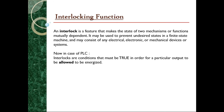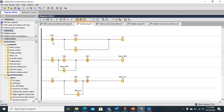Now we move to the interlocking function. Interlock is a feature that makes the state of two mechanisms or functions mutually dependent. It may be used to prevent undesired states in a finite state machine and may consist of electrical, electronic, or mechanical devices or systems. In PLC, interlocks are conditions that must be true in order for a particular output to be allowed to be energized.